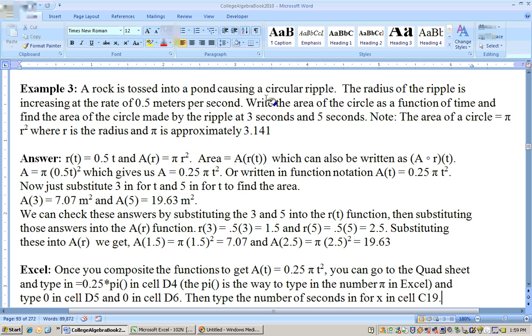On this example, a rock is tossed into a pond causing a circular ripple. The radius of the ripple is increasing at a rate of 0.5 meters per second. Write the area of the circle as a function of time and find the area at 3 seconds and 5 seconds. The area of a circle is pi r squared. The rate is 0.5 meters per second, so the radius r is a function of time, r(t) equals 0.5t.